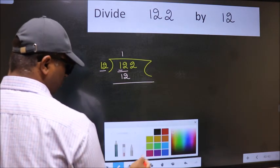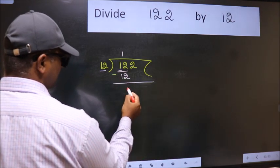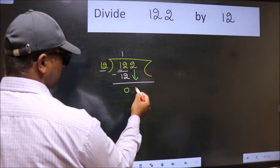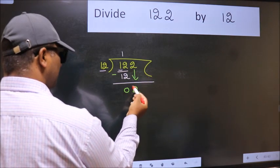Now, we should subtract. We get 0. After this, bring down the beside number. So, 2 down.